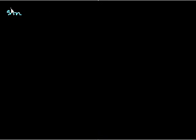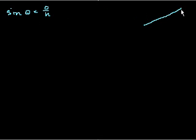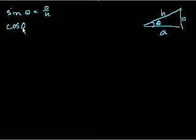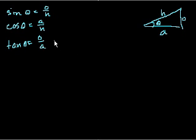So we know from SOHCAHTOA that sine of theta is equal to the opposite over the hypotenuse. If I draw a triangle here: this is theta, this is the opposite, this is the adjacent, this is the hypotenuse. Then sine of theta equals opposite over hypotenuse. Cosine of theta — basic review at this point — is the adjacent over the hypotenuse. The tangent of theta equals the opposite over the adjacent, which is also equal to sine of theta over cosine of theta, as we showed a couple of videos ago.